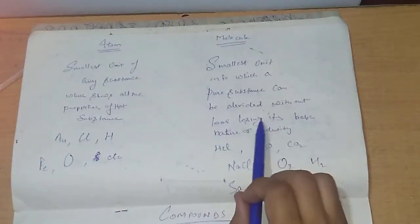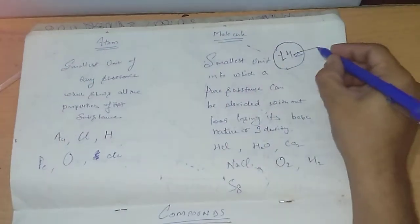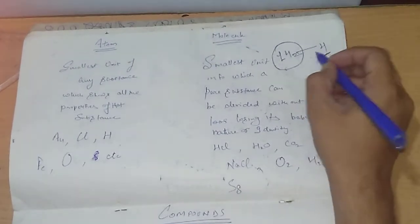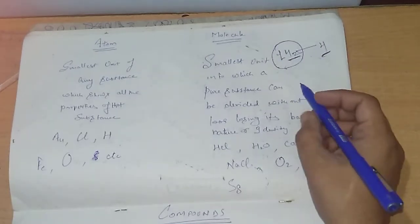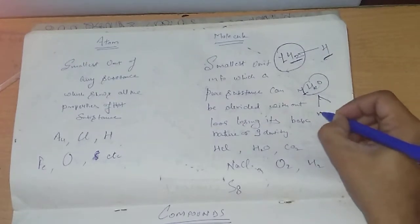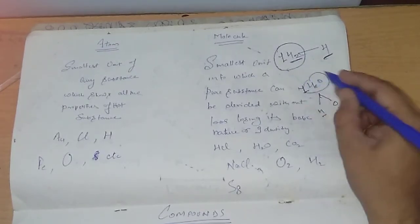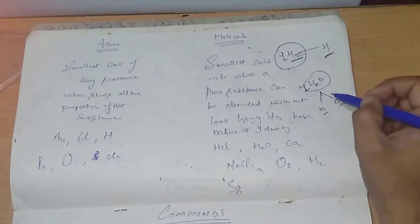A molecule is the smallest unit into which a pure substance can be divided without losing its basic nature or identity. For example, if a hydrogen molecule — which has two atoms — is divided or broken down, we get one atom of hydrogen and one atom of hydrogen. The properties of one atom of hydrogen are similar to the hydrogen molecule because there is no difference in the constituent atoms. However, when one molecule of H2O is divided, it splits into hydrogen and oxygen, which have different properties.